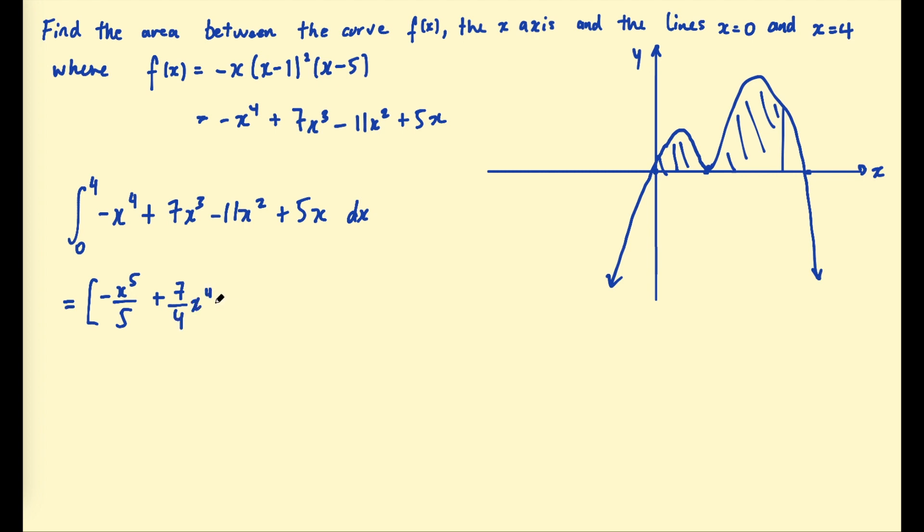Again, applying the power rule, plus 1 to the exponent, divide, that's going to be x⁵/5, plus 7/4 x⁴, take 11/3 x³, plus 5/2. And then our bounds go on the right-hand side. You can get a little bit fancy here and factorize an x², which is what I'm going to do. I feel like it makes plugging in the 4 a bit easier if this is just x³ here and not x⁵. So if we factorize that x², then it should make the calculations just a little bit simpler.